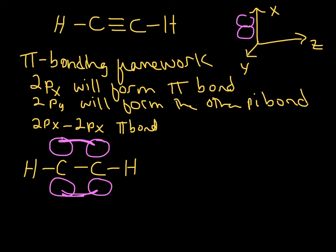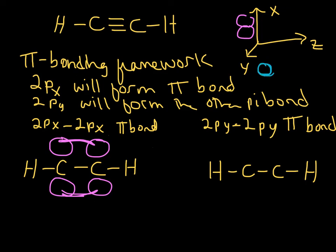Let's draw the other one. This is going to be the 2py-2py pi bond. Remember from the previous video, when you want to show something coming in and out of the screen, you make the front lobe bold and the back one dotted. And so that kind of goes for anything, an atom sticking out of the screen, anything like that. But in this case, it's going to be a py orbital.